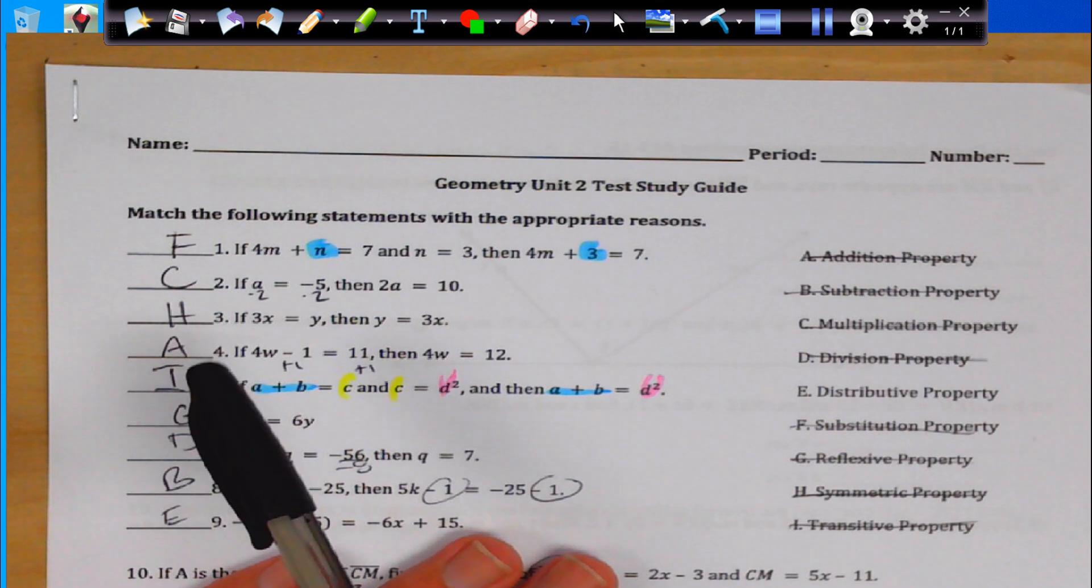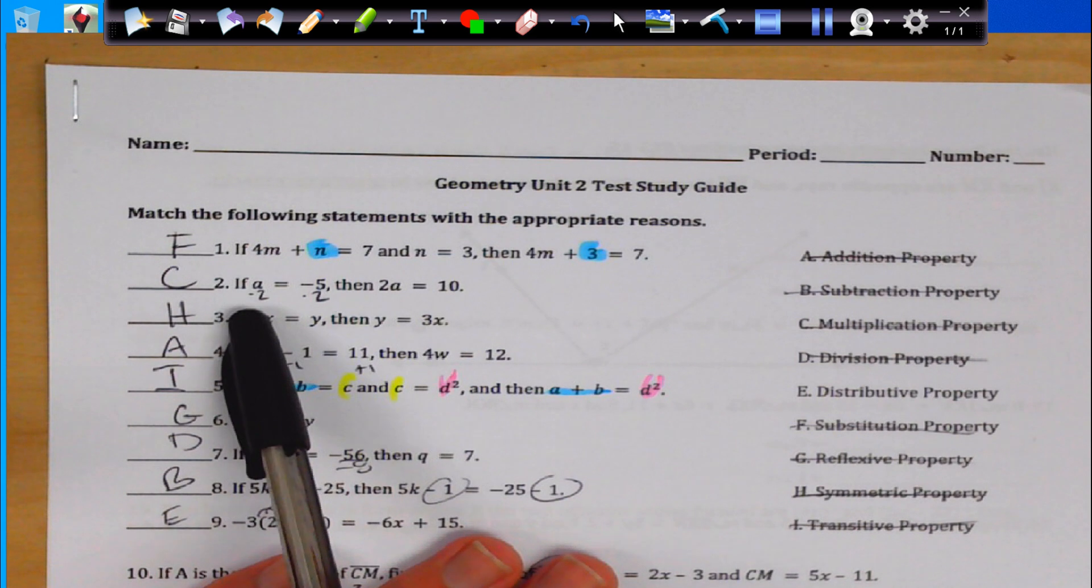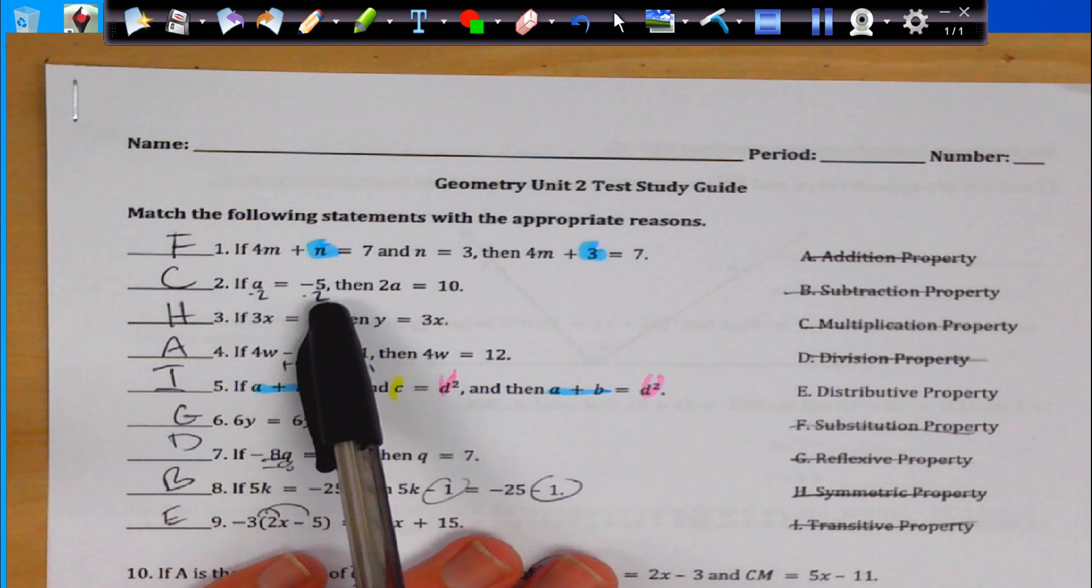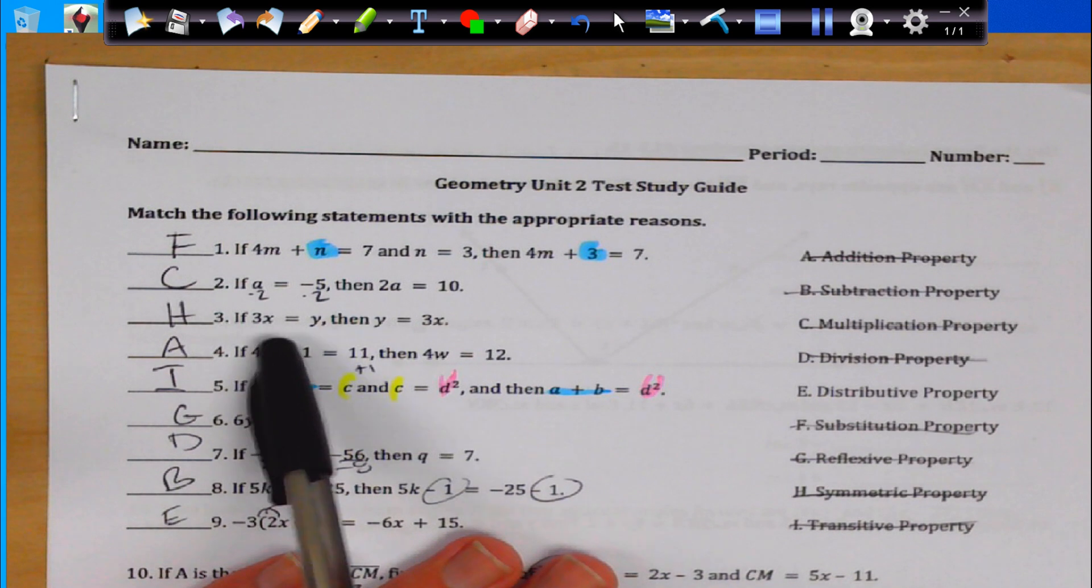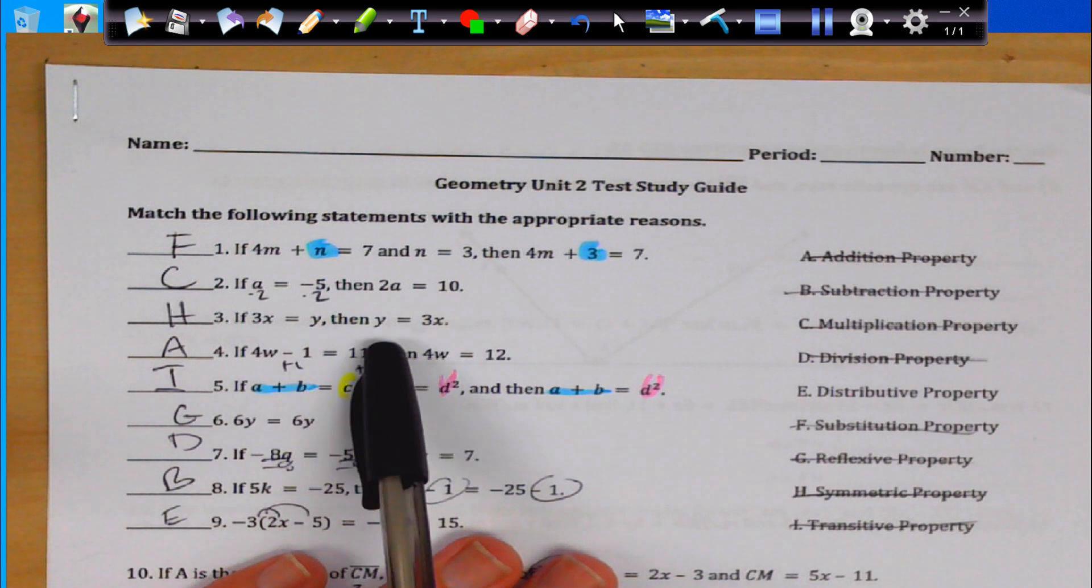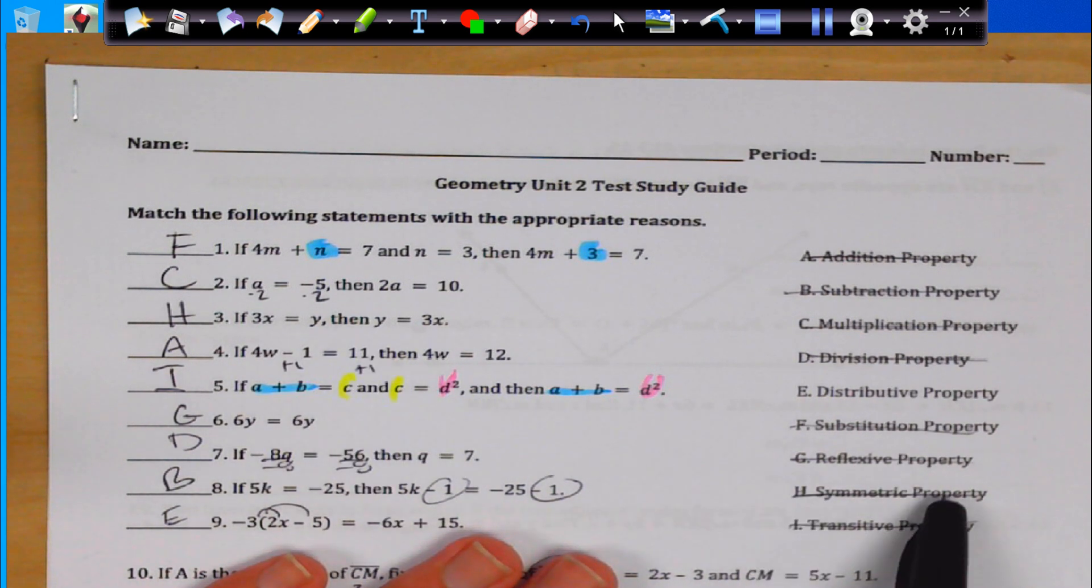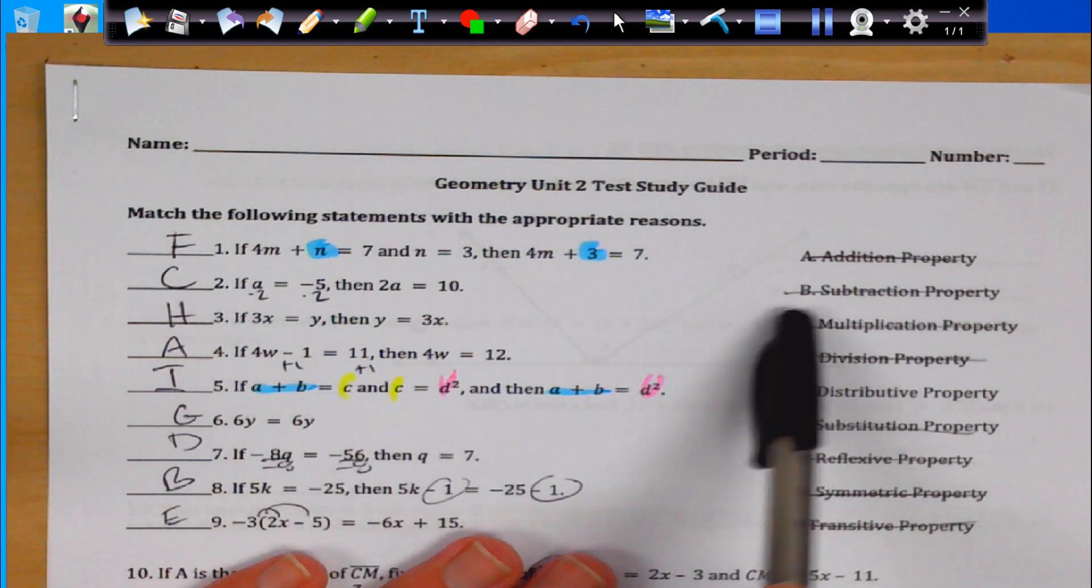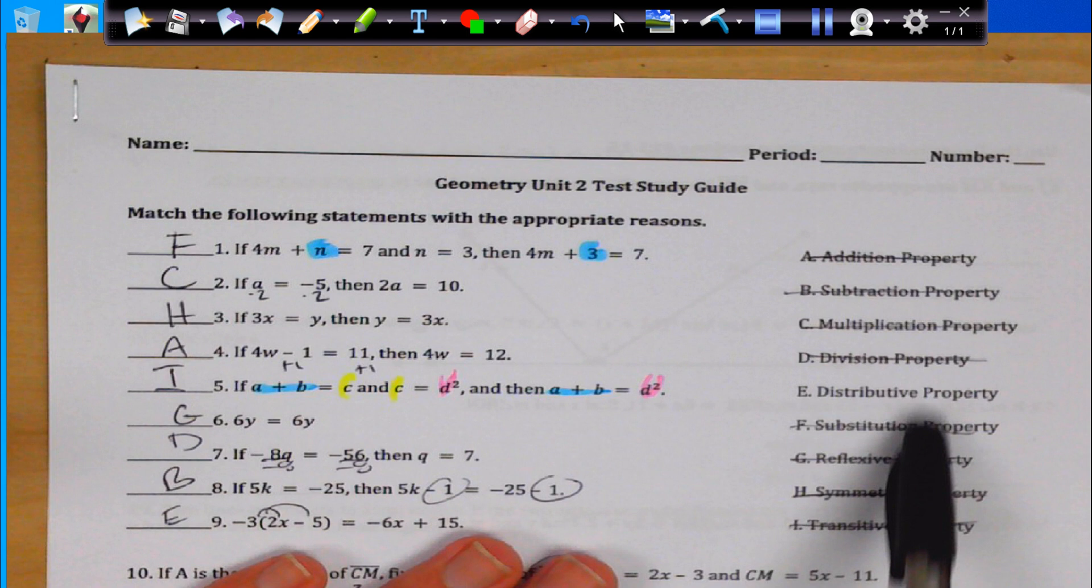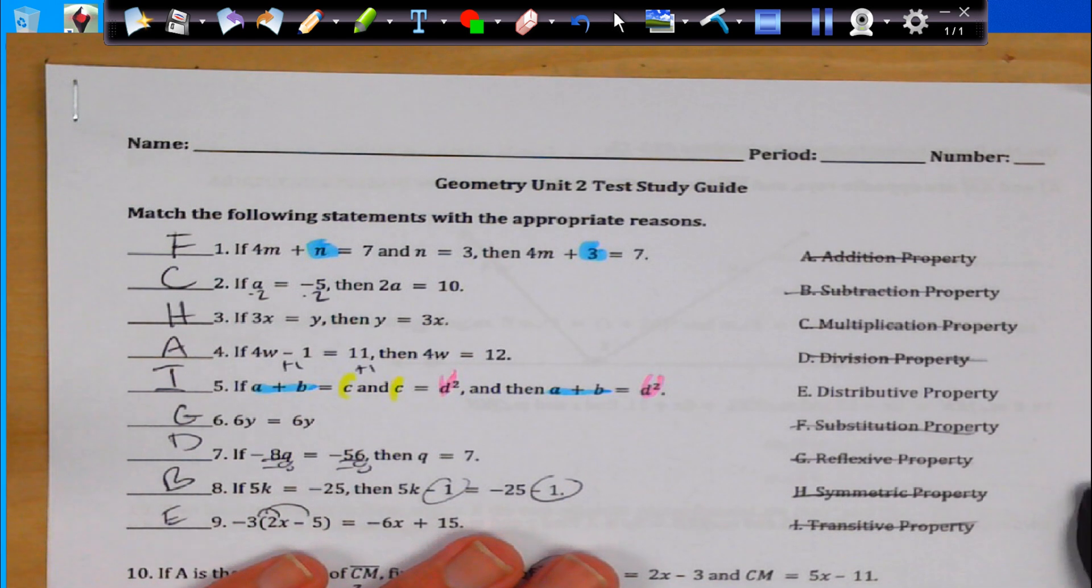So that 3 gets replaced by n, so that's our substitution property. Number two, we're going from a to negative 5, so I'm just multiplying both sides by 2, so that's multiplication property. Over here, it's the same thing, but just switched around, so that is my symmetric property. Here, I'm adding 1 to both sides, so I'm talking about addition property. All these should say of equality.